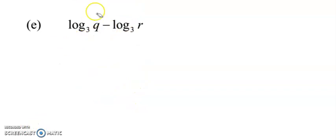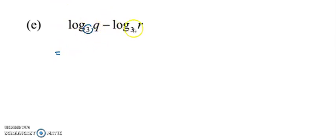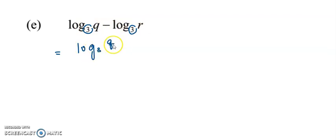Example E is a simple one because both terms have coefficient 1, the operation is minus, and they have the same base. We can apply the laws of log by taking q divided by r because the operation is minus.